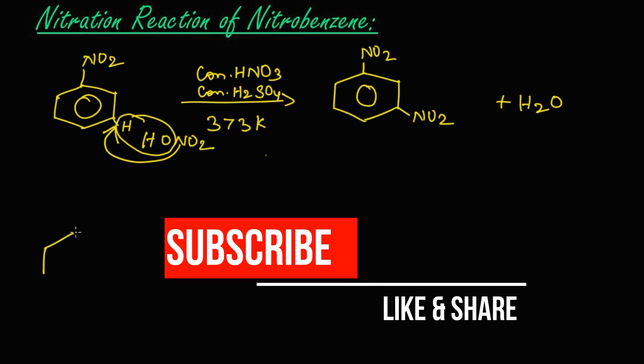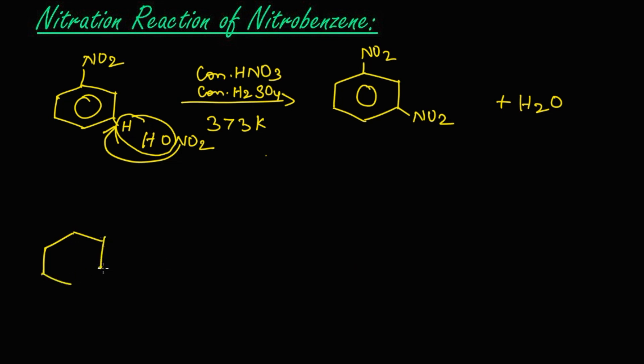This is nitrobenzene. Here the same nitration takes place, that is concentrated nitric acid HNO3 and concentrated sulfuric acid H2SO4, but the temperature differs: 473 Kelvin. Here the nitration takes place in both the meta positions.